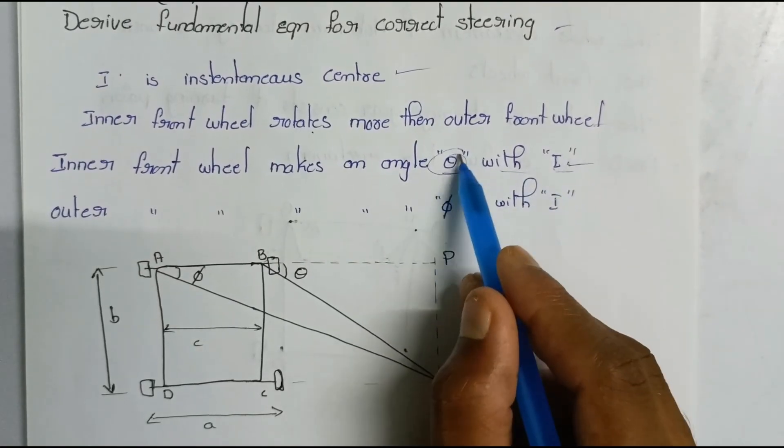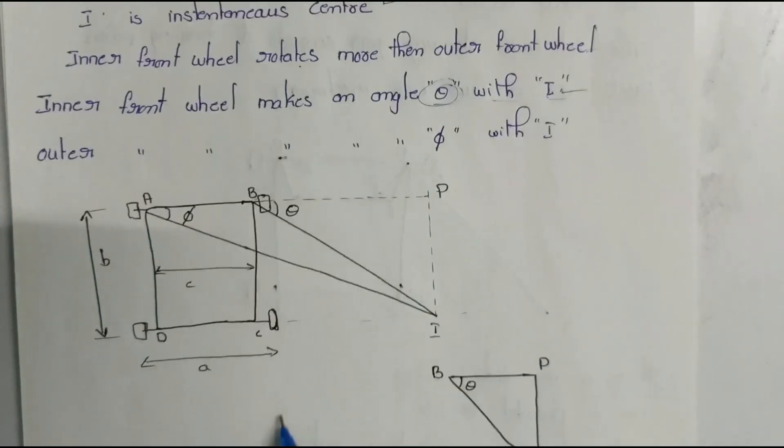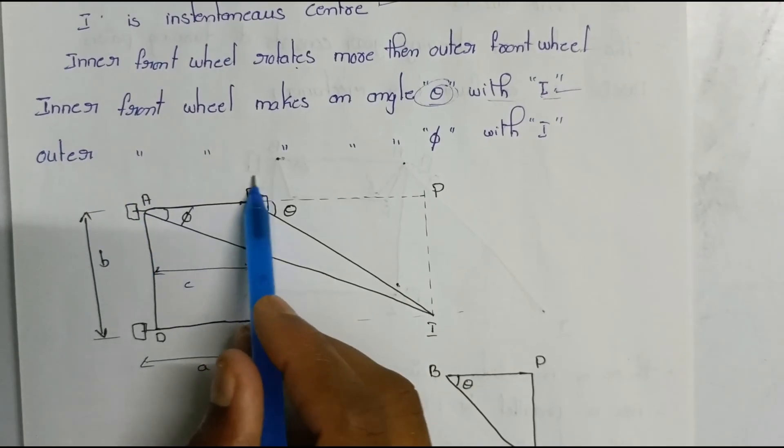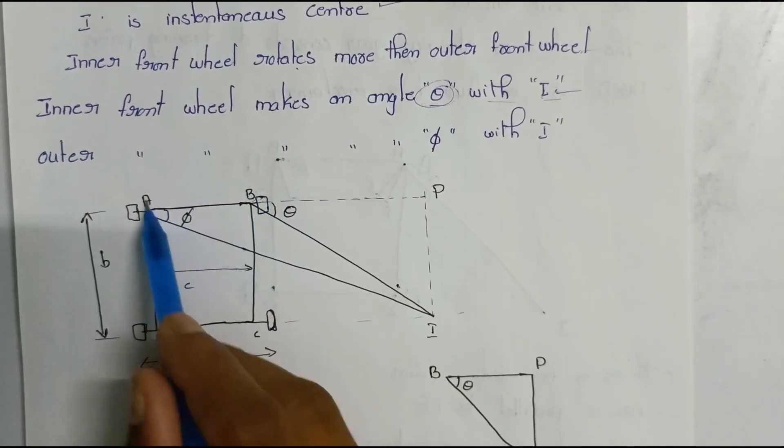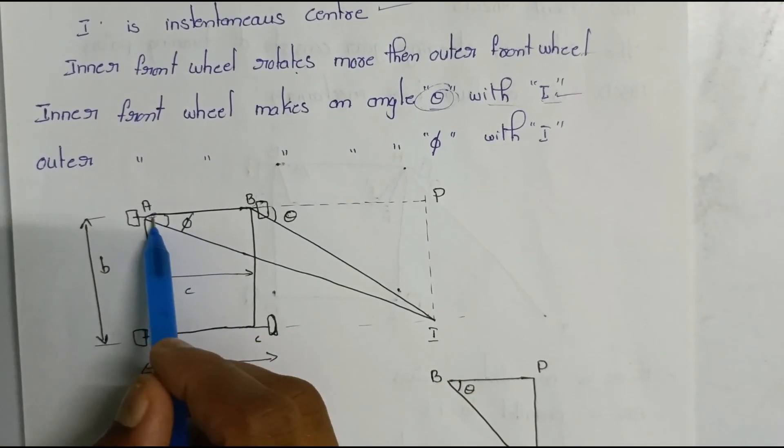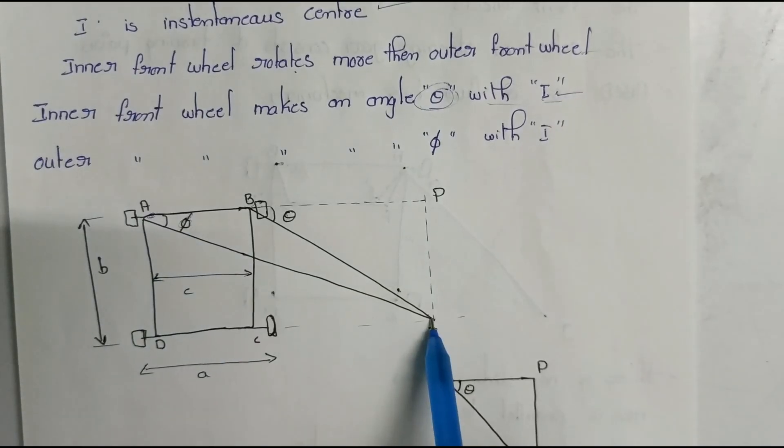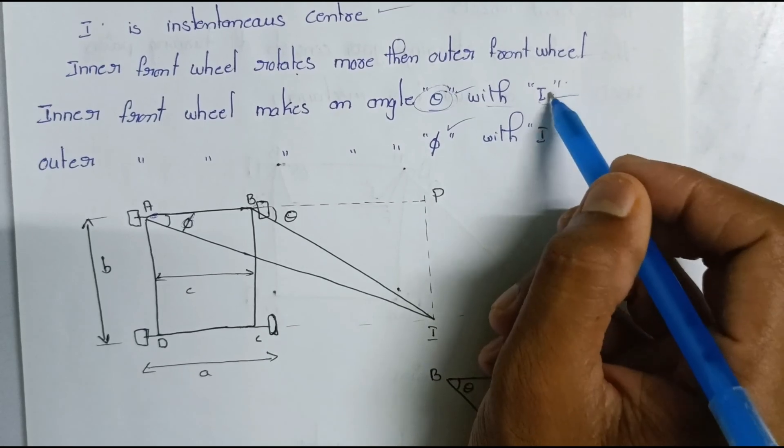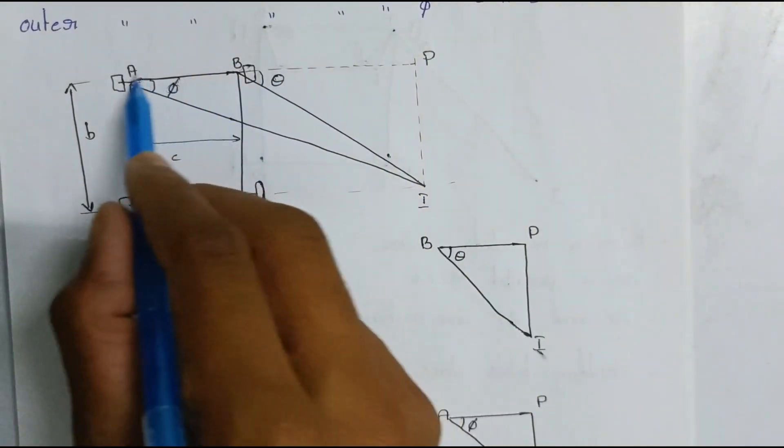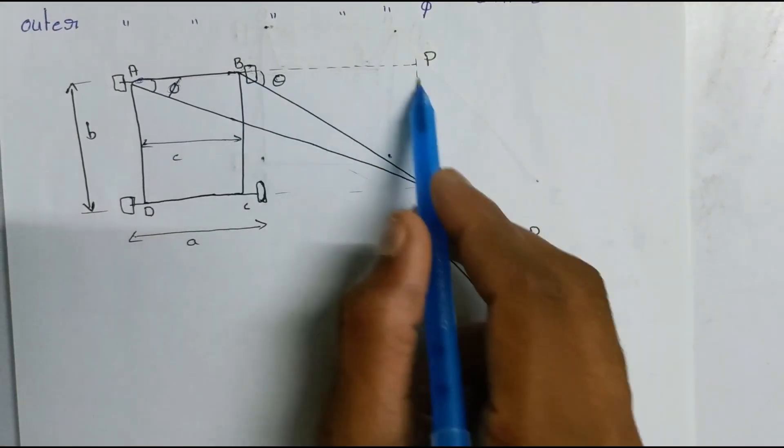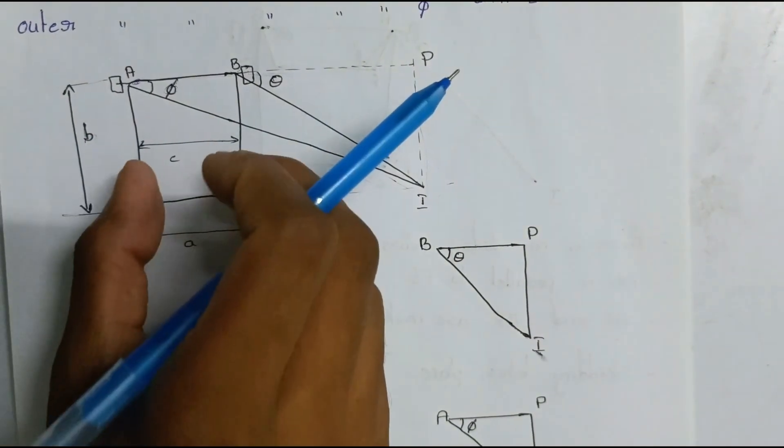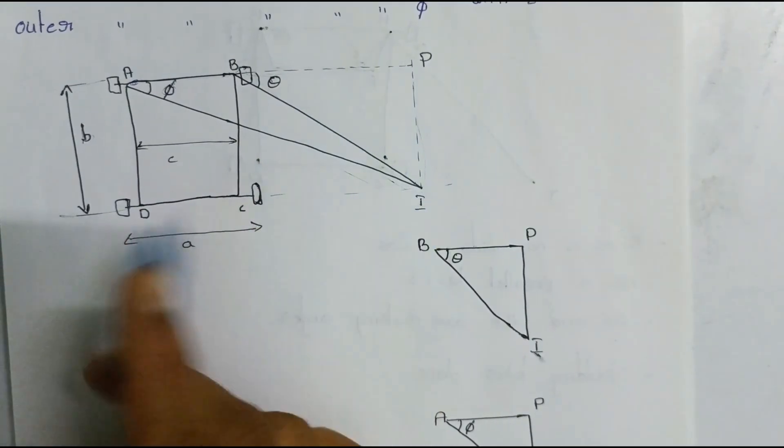The instantaneous center is I. The inner front wheel is theta angle. This is the outer inner wheel. The inner wheel is the outer wheel, the inner front wheel. This is the right angle. The two wheels, the length is A, and the distance between inner and outer wheel.